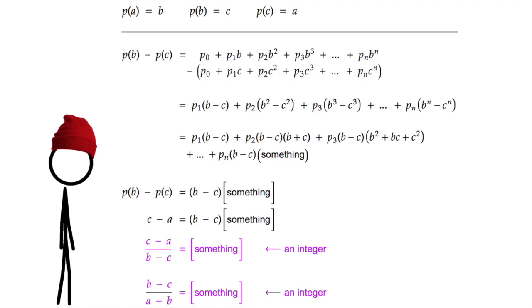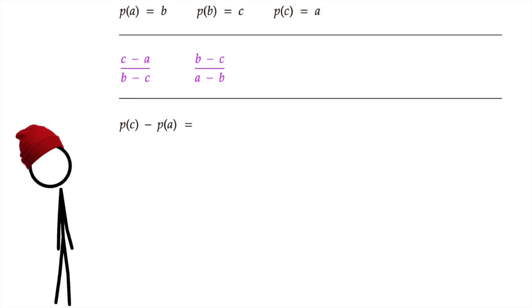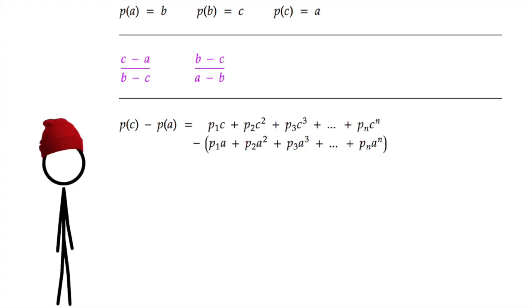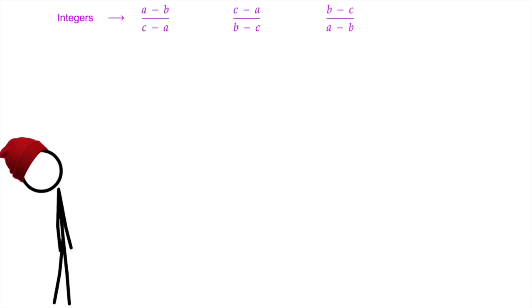Nice! Now we've got two integers. First we did p of a minus p of b and got this integer. And then we just did p of b minus p of c and got this one. And now we have to do it one more time, for p of c minus p of a. And I'm just going to rush through it since it's exactly the same thing, no one cares, and you can probably even guess what we get. Yep, who knew, it's a minus b divided by c minus a.